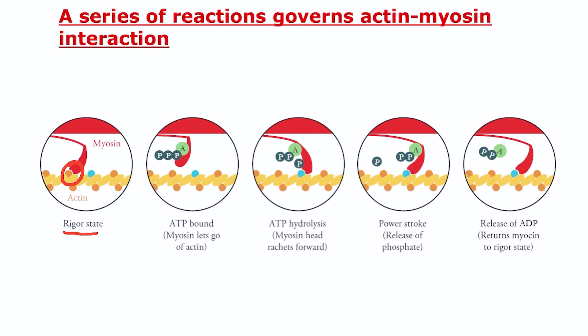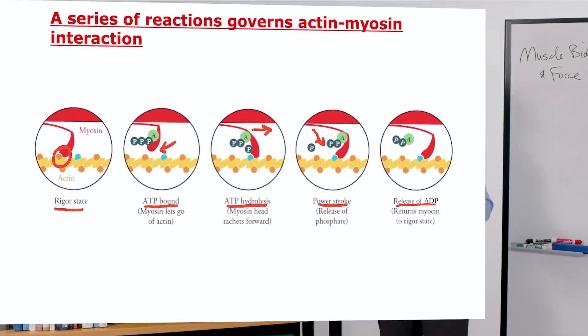When we're living, we have ATP floating around. In step two, the ATP is bound, and myosin lets go of the actin. That allows this movement of the thin and thick filaments relative to one another. Step three, ATP hydrolysis. The myosin head ratchets forward. It moves forward. Step four, the power stroke. My favorite. The release of the phosphate of the ATP, and while the myosin moved forward, now it's ratcheting back, and that's where we get the shortening of the sarcomere and the muscle fiber. And finally, to complete the cycle, the release of ATP, that returns the myosin to the rigor state, and we repeat.